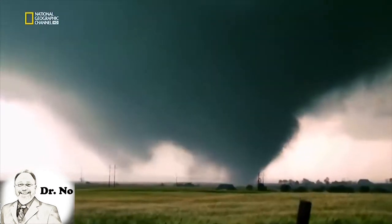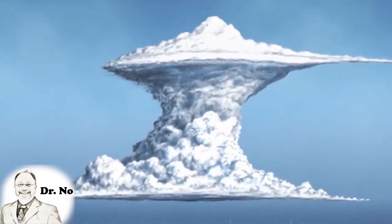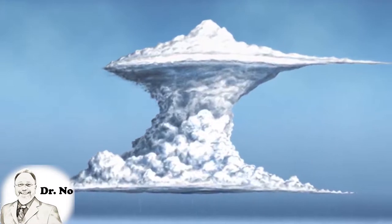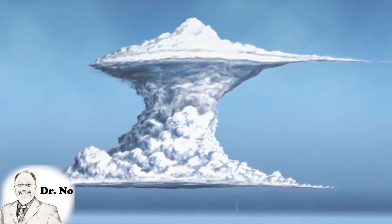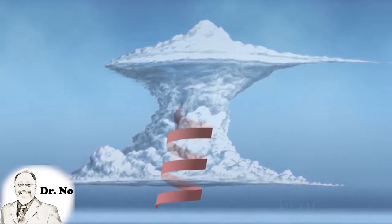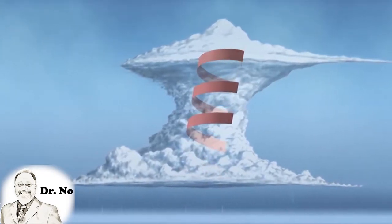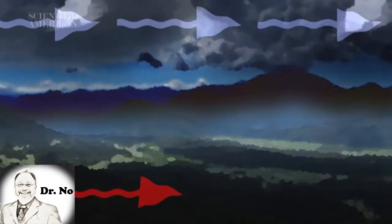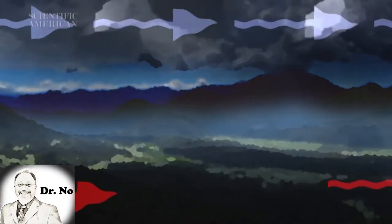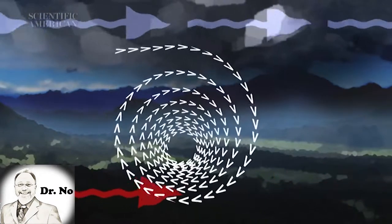Tornadoes only form when a thunderstorm has a particular combination of winds. A rising thunderstorm can begin to spin when it is affected by winds blowing in different directions. It starts to rise and is pushed to the side by wind. It rises a bit more and is adjusted again by wind moving in another direction. Winds move in different speeds and directions.